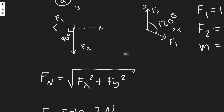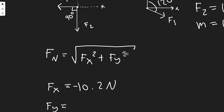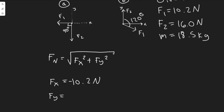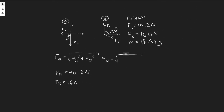In the y direction, F1 is only in x, so the only force along the y axis is F2 which is 16 newtons. Part A is straightforward because each force lies along one axis. Plugging in: Fn equals the square root of 10.2 squared plus 16 squared, which equals 18.87 newtons.